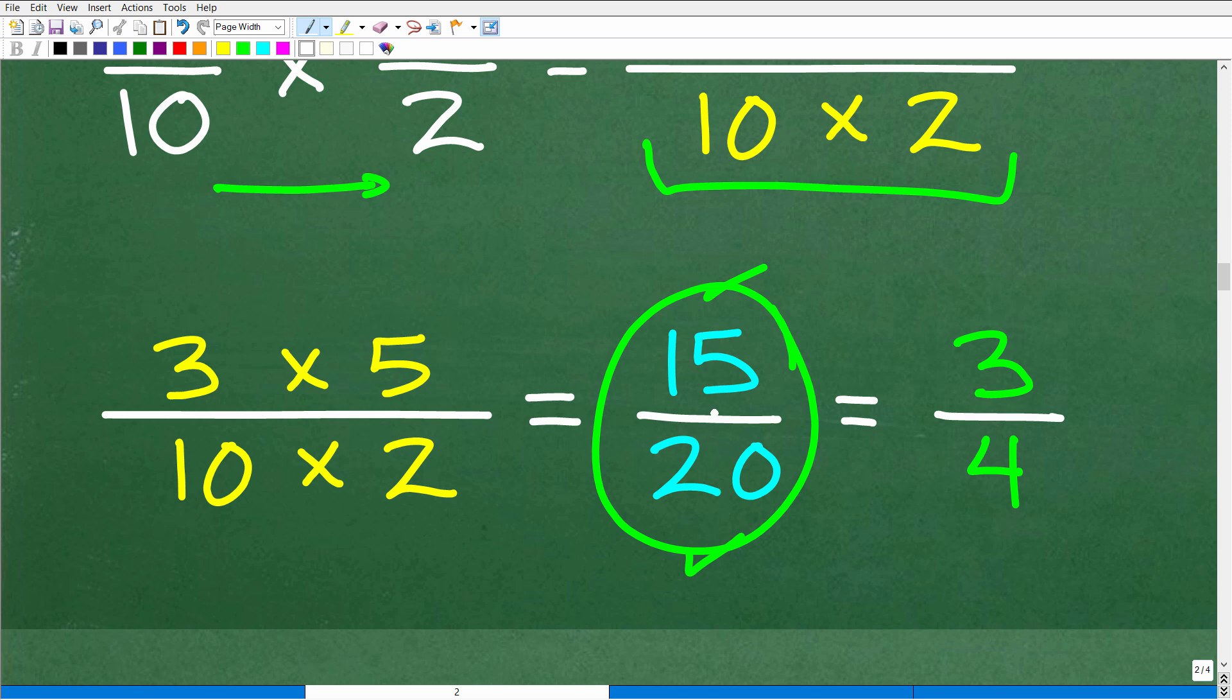So when you're working with fractions, you always want to reduce or simplify your fraction. So here you can see that 5 goes into 15 three times and 5 goes into 20 four times. So 3/4 is that fraction simplified. Now, let's see this in action a little bit more here.